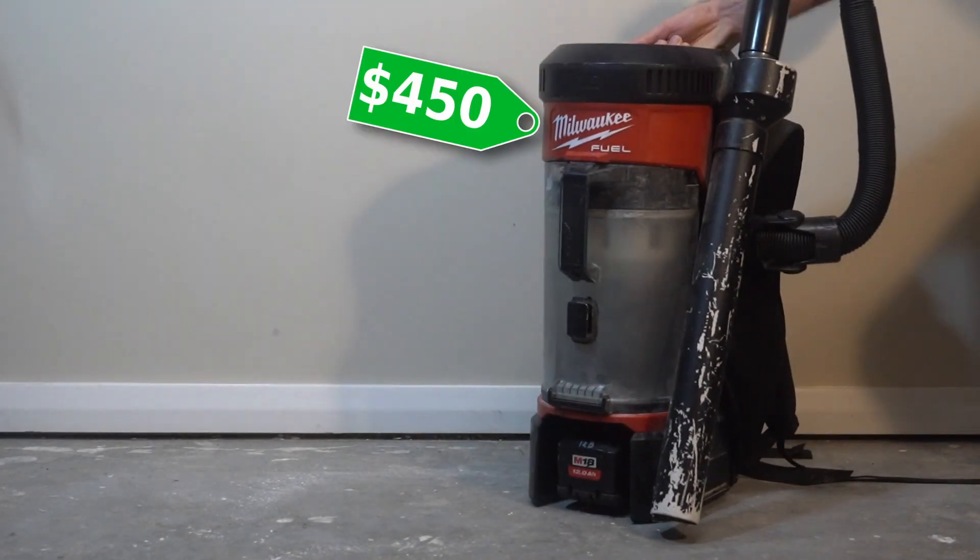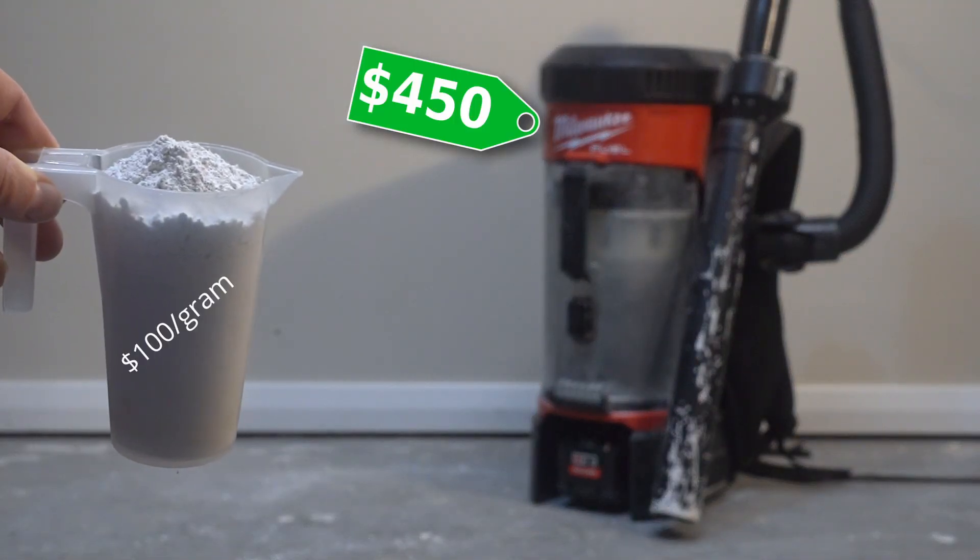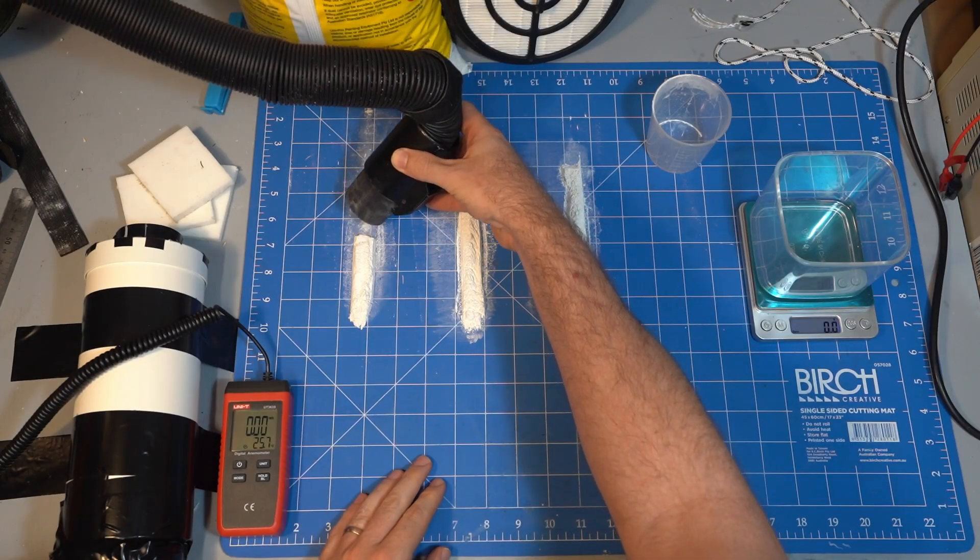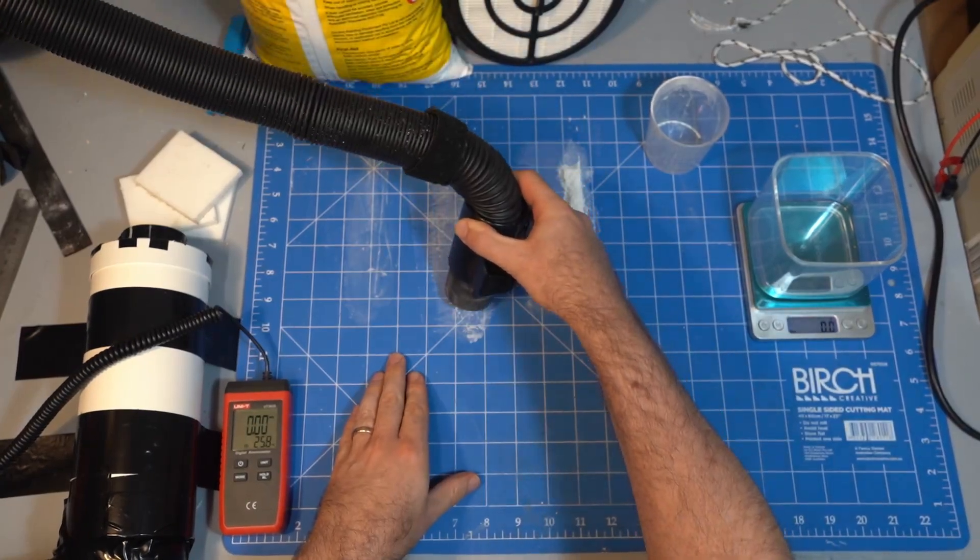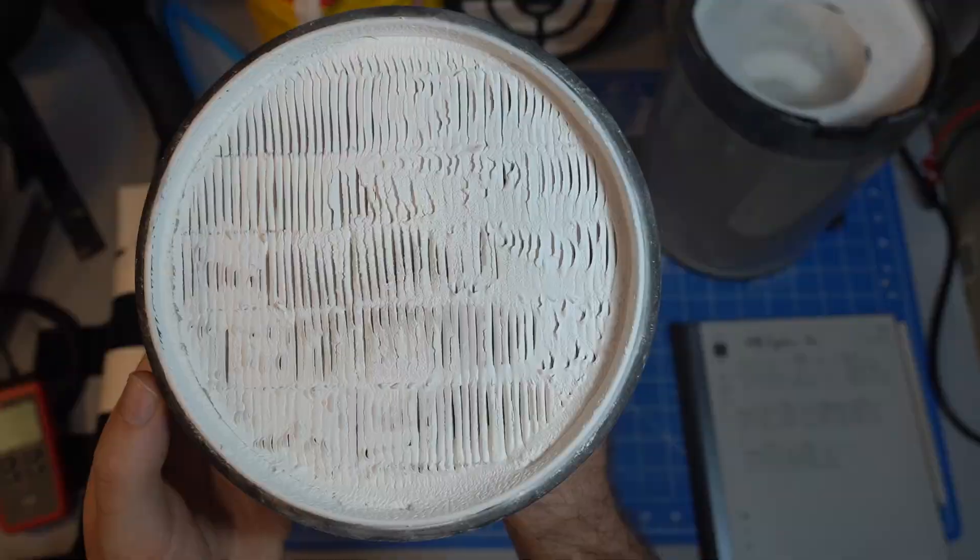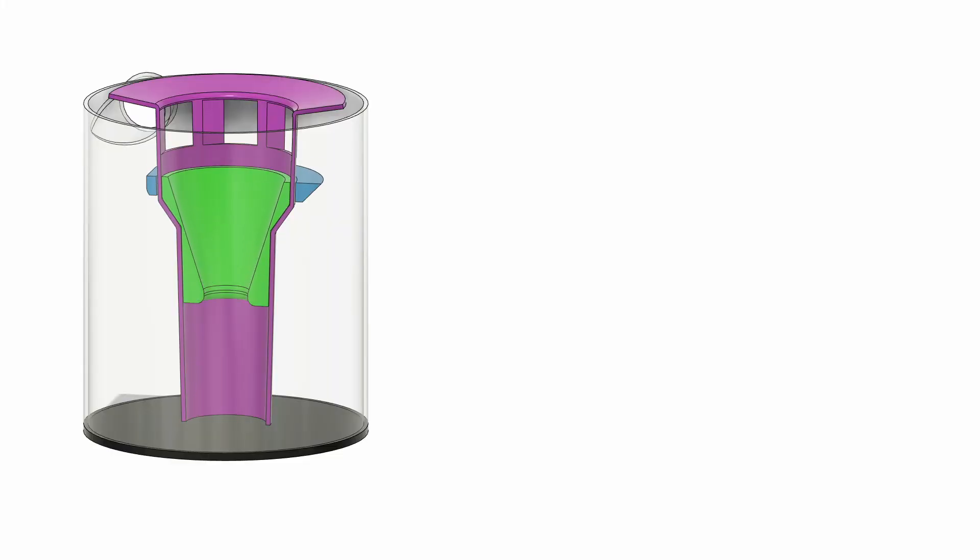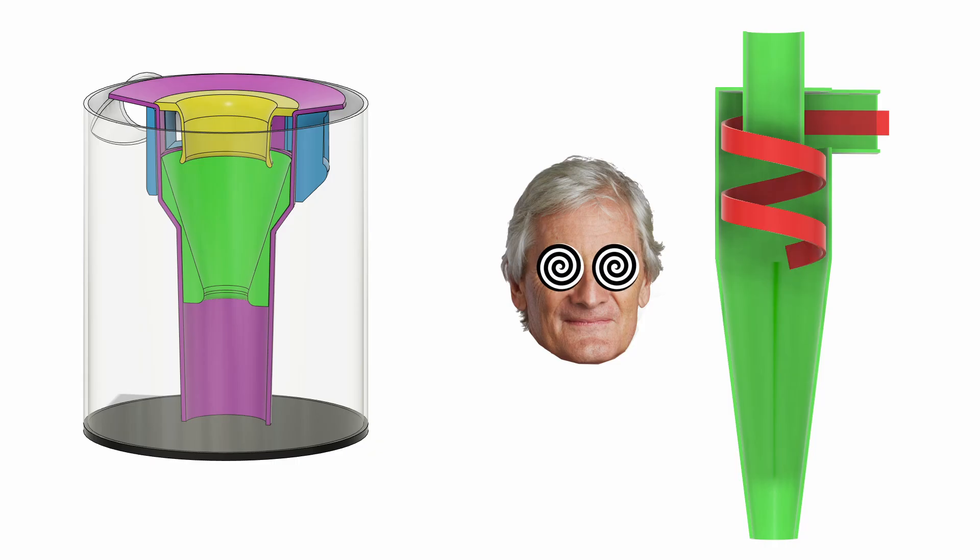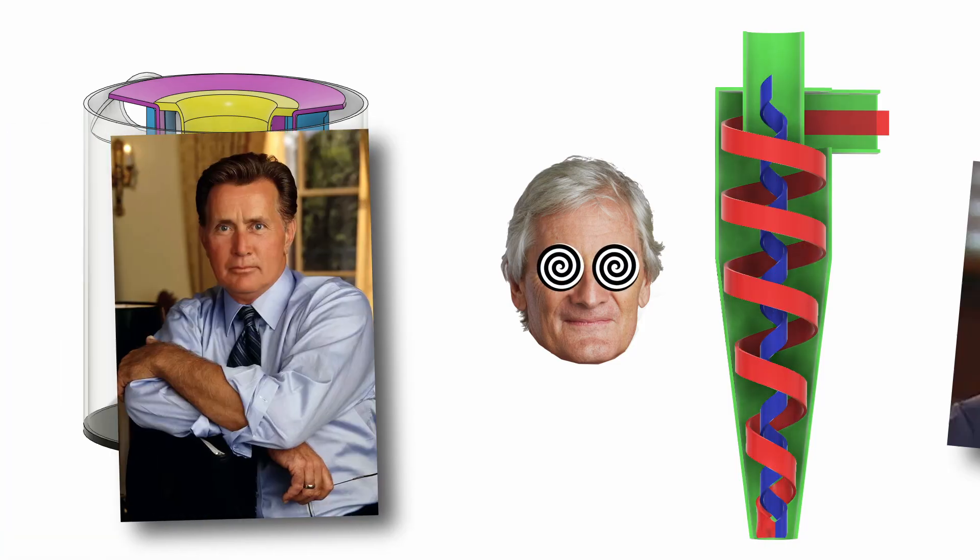This is a $450 vacuum and this is a cup of unidentified white powder. After just half a cup this vacuum is wasted. The filter is clogged and it can barely party anymore. Our mission is to mod this vacuum to have true cyclonic separation and turn it from Martin Sheen into Charlie Sheen.